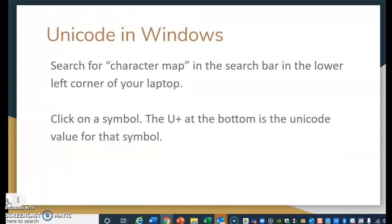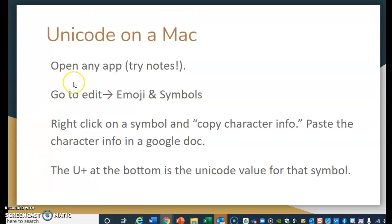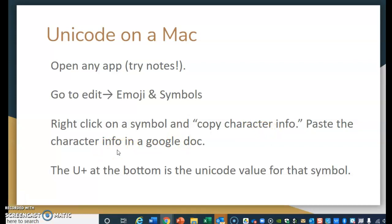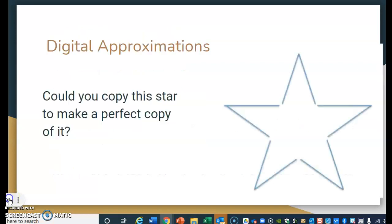You're going to have to use the Character Map for your activity in Schoology today. If you have a Mac, open up any app — I would try Notes. When you go to Edit, go to Emoji & Symbols. Then right-click on the symbol and copy the character info, and paste that into a Google Doc or Notes. The U+ value at the bottom is the Unicode value for that symbol. If you have questions, you can email me or message me in Schoology.